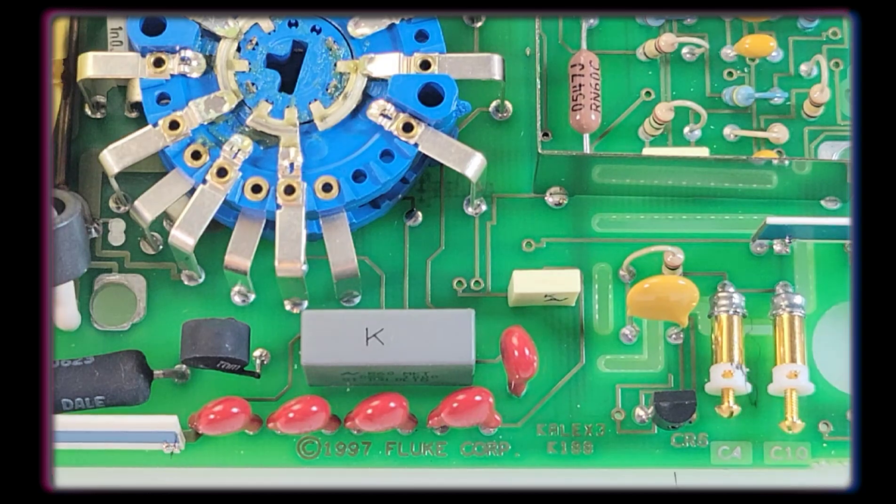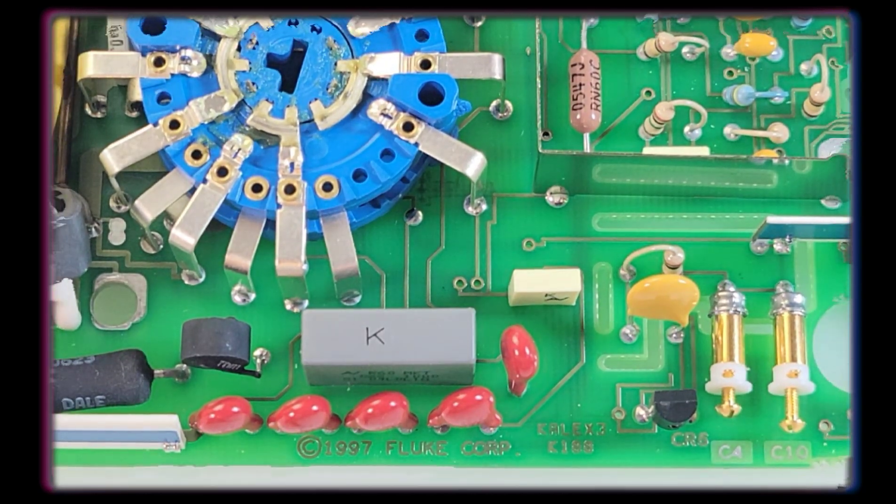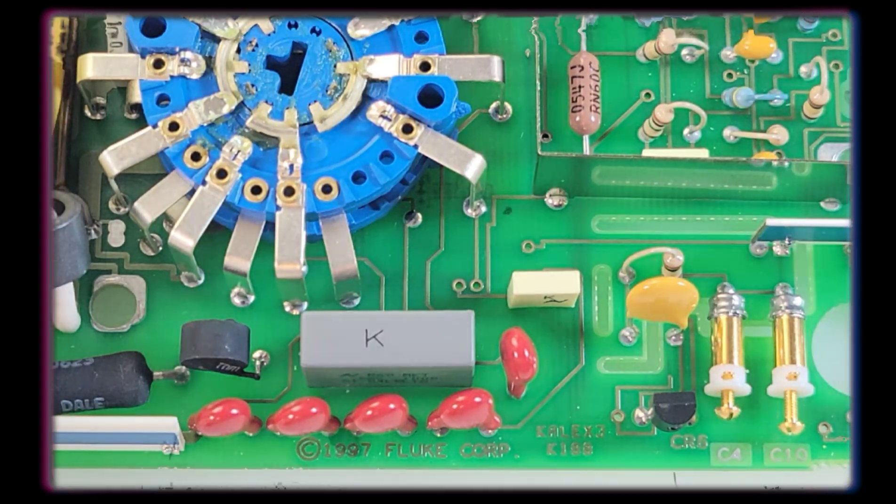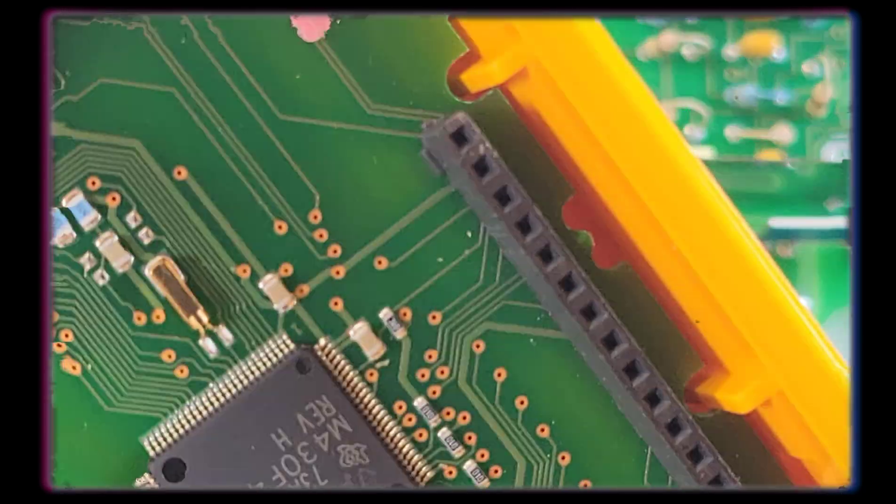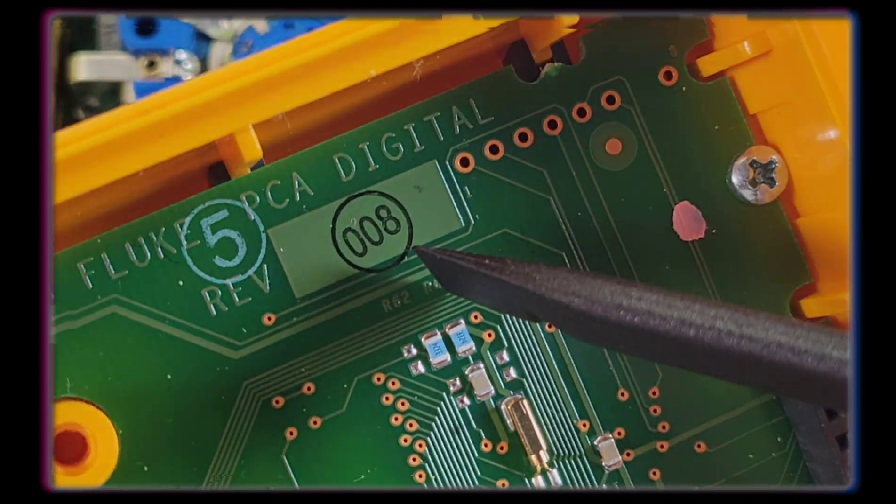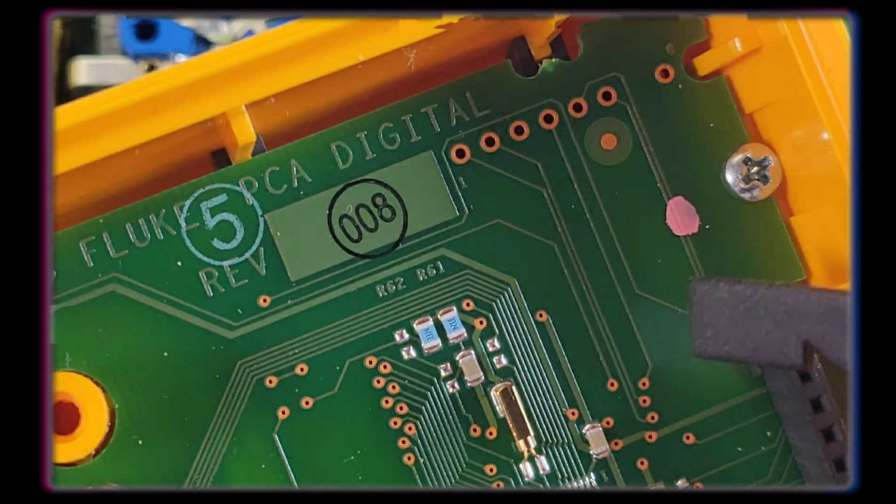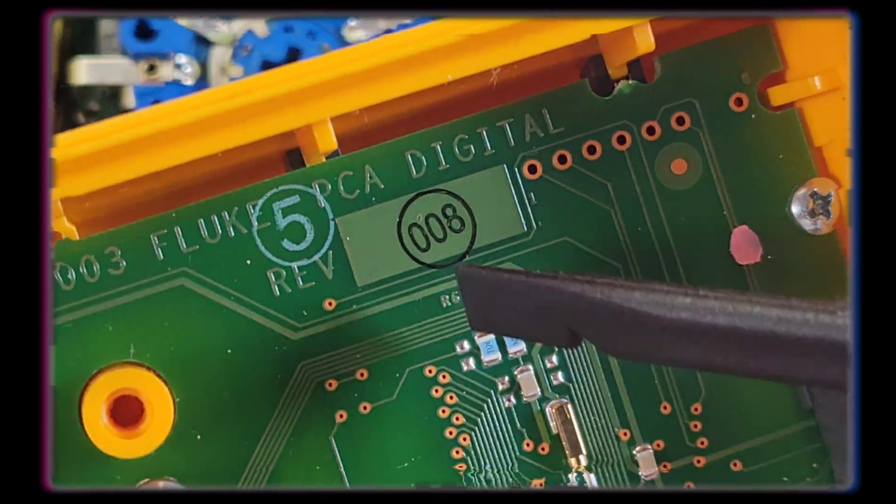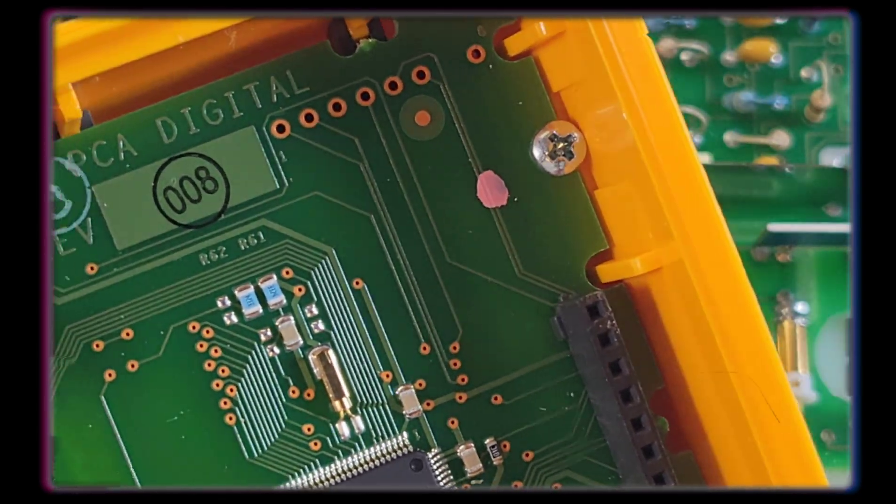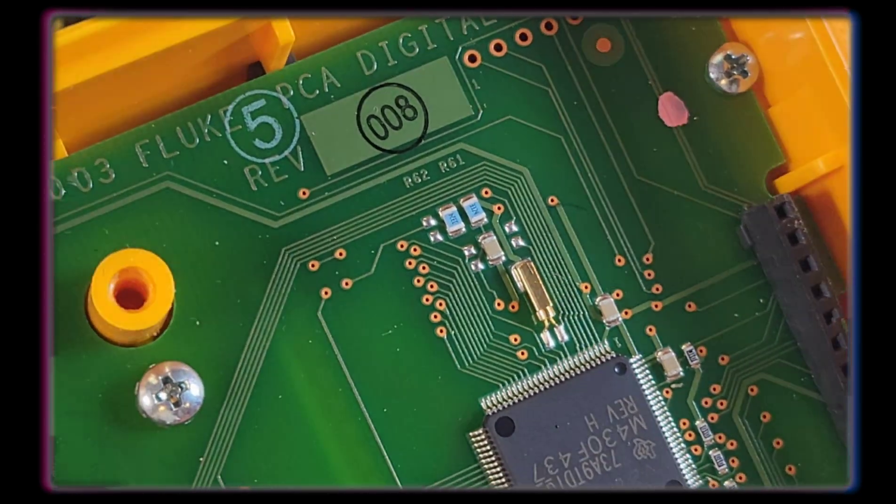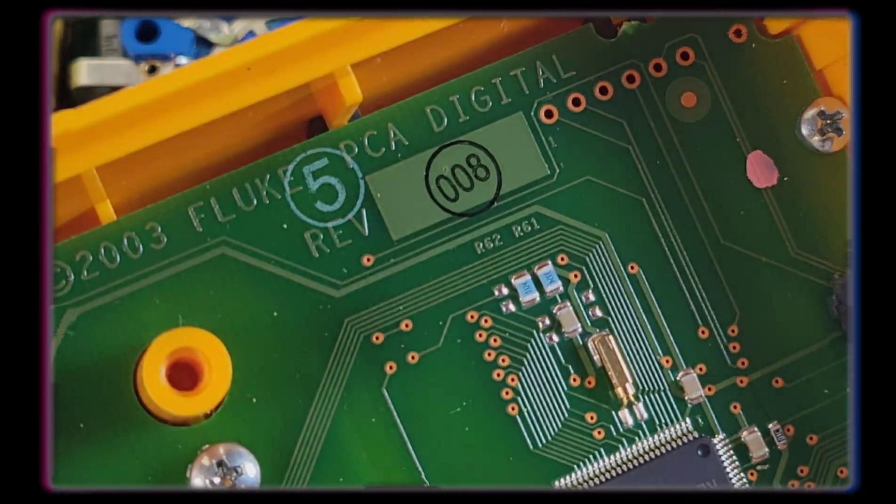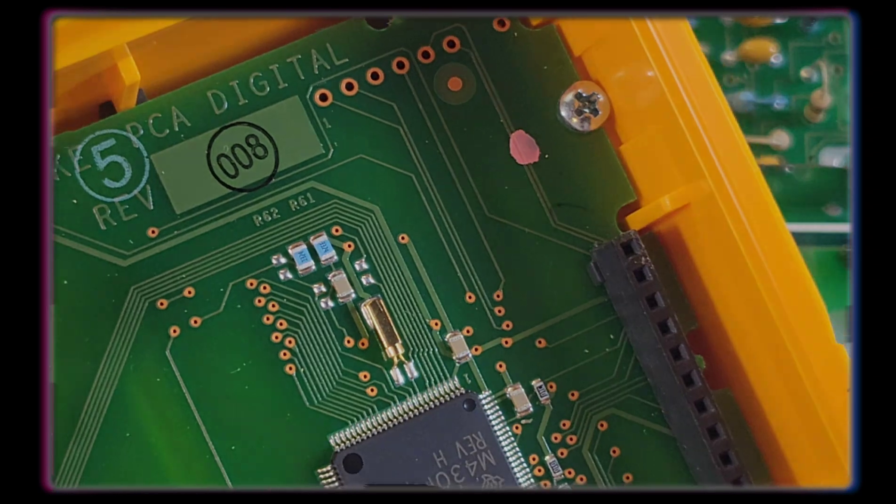So we have a date stamp, 1997 Fluke Corporation. But this revision is actually a little newer. This is 2003. We have 2003 here on the other side. 008 was the name of the engineering stamp, the one that actually did the Q&A on this. So we're talking about 20 years old. Now, the original Fluke came out way back in 1986. So if you can pick up an original, that's a 40 year old multimeter you're looking at.